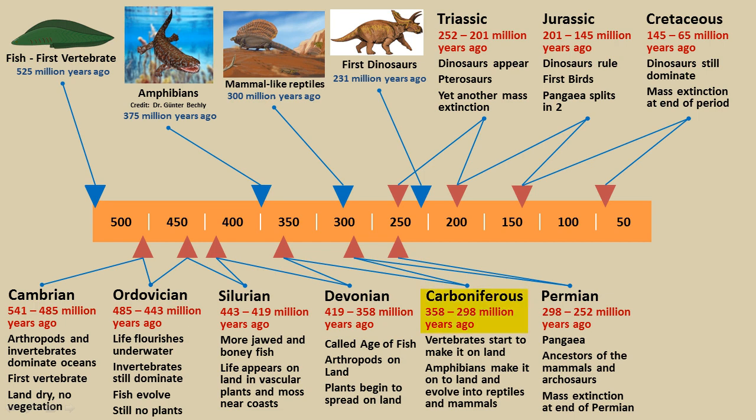The next time period is called the Carboniferous, occurring between 358 and 298 million years ago. For the first time, vertebrates start to make it on land, and that involves the amphibians. After the amphibians make it onto land, they eventually evolve into reptiles and mammals. The final period of the Paleozoic was called the Permian, existing between 298 and 252 million years ago. That is known for Pangaea — where all of the land masses formed one gigantic continent. Here we see the ancestors of the mammals evolve, and we also see archosaurs, the precursor to the dinosaurs.